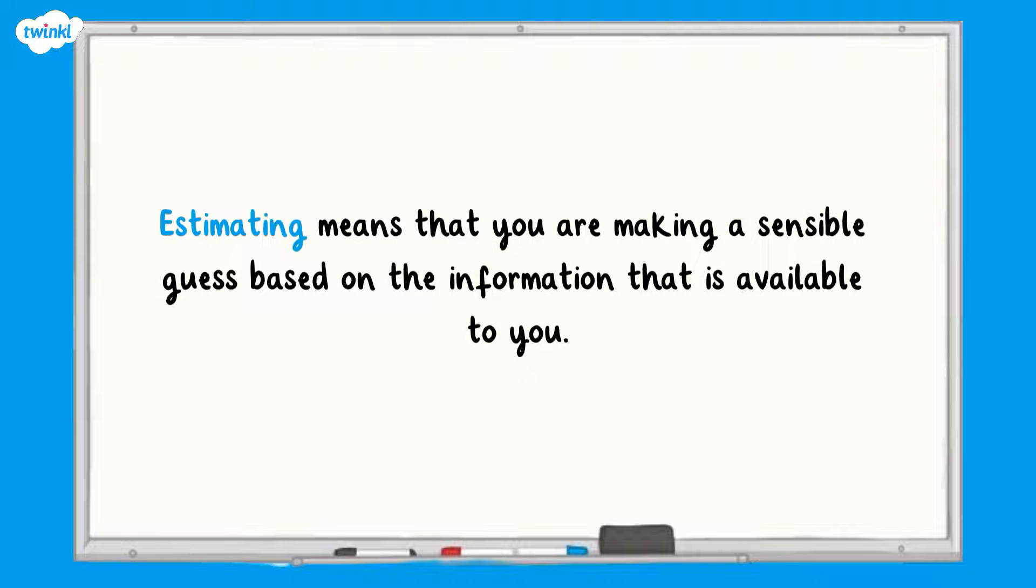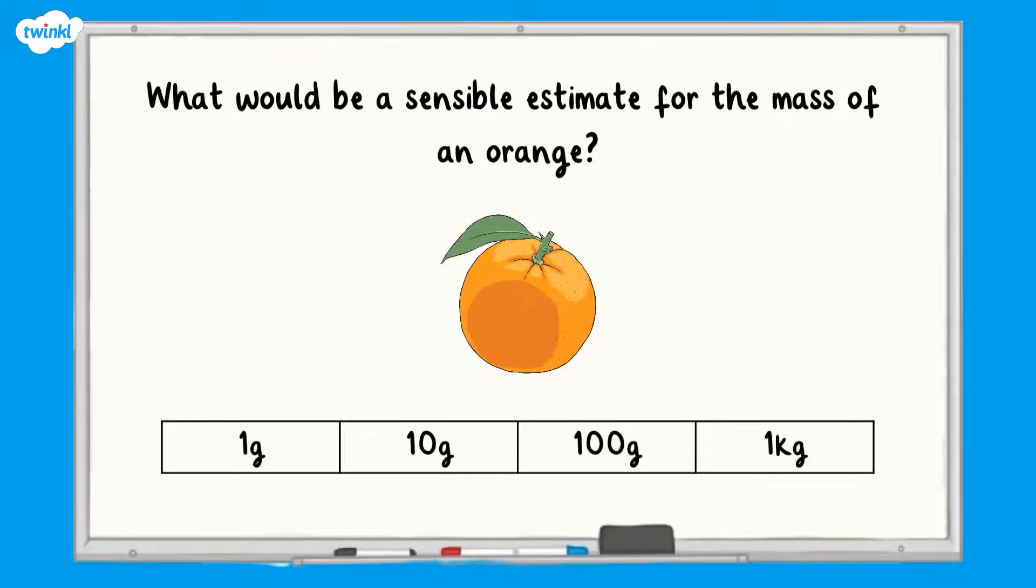Now let's look at estimating. Estimating can also be called approximating and means that you are making a sensible guess based on the information that is available to you. For example, what would be a sensible estimate for the mass of an orange? Pause here to have a think and press play when you're ready to carry on.